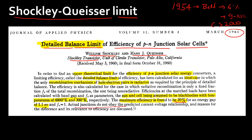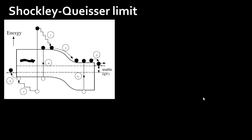They got some pushback for this prediction and had to explain the wide discrepancy between the observed cell efficiency and what they were predicting — essentially explaining why actual junctions did not match these predicted efficiencies.